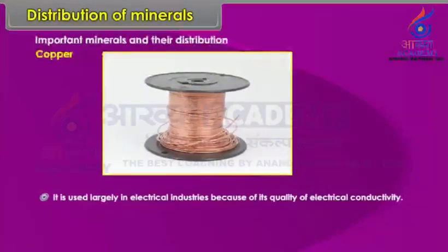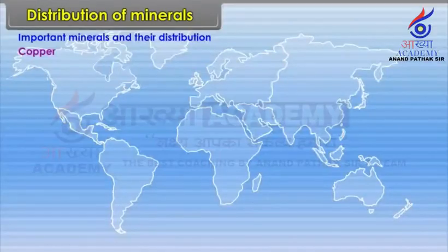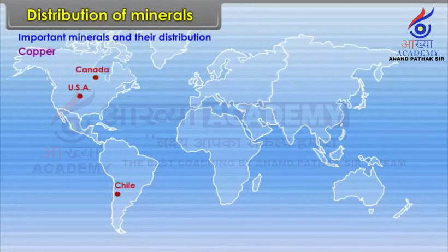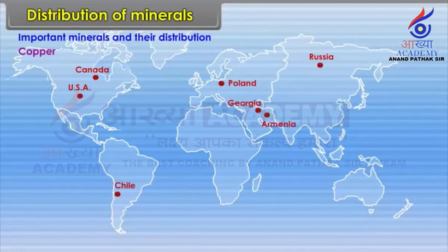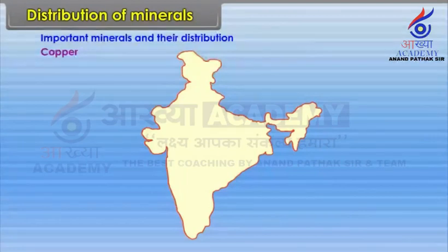Copper is found worldwide in: Chile, USA, Canada, Poland, Russia, Georgia, Armenia, Congo and Zambia. In India, it is found in Jharkhand and Rajasthan.